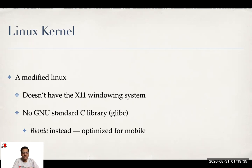When Google started showing its interest in Linux and adopted it for Android, the open source Linux community was rather excited and had very high hopes with a big player like Google entering the scenario. But as Google started developing things for Android, they had to make certain changes which were basically not backward compatible. So those changes could not be merged into the standard Linux kernel, and there is a bifurcation from that point. The standard Linux is developed in its own way, and then Google's Android Linux is developed with its own dependencies.